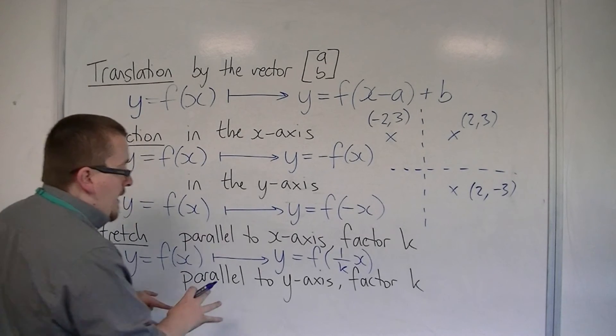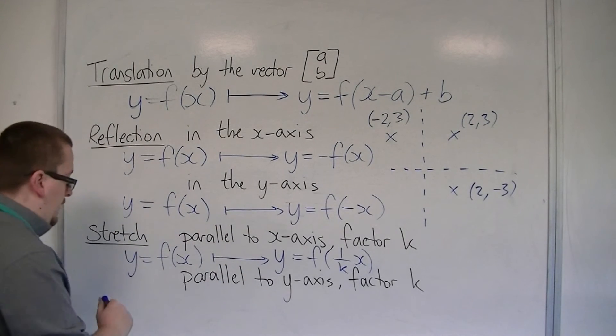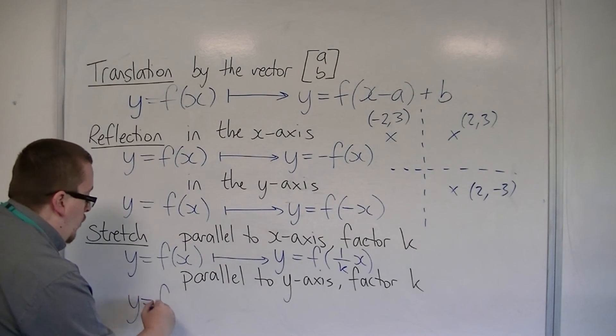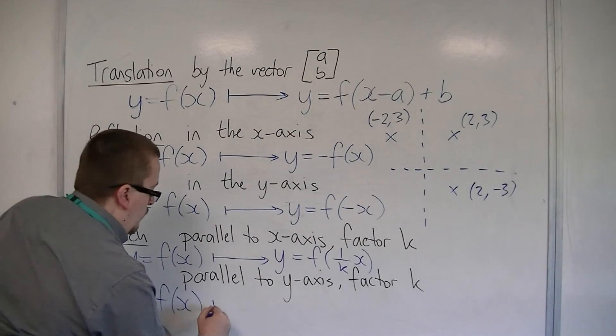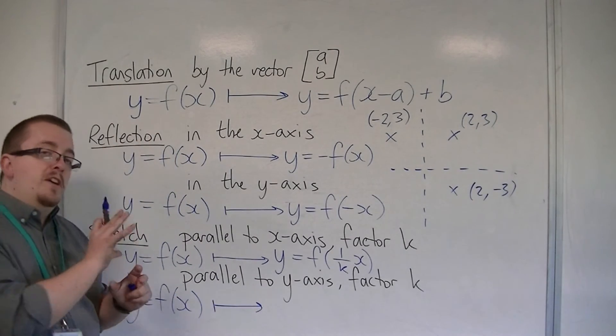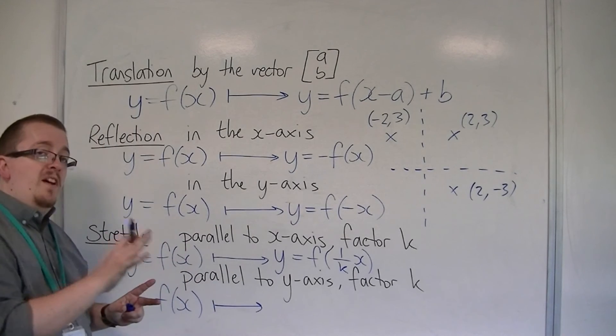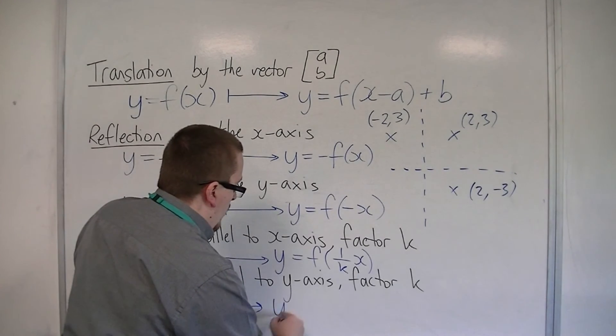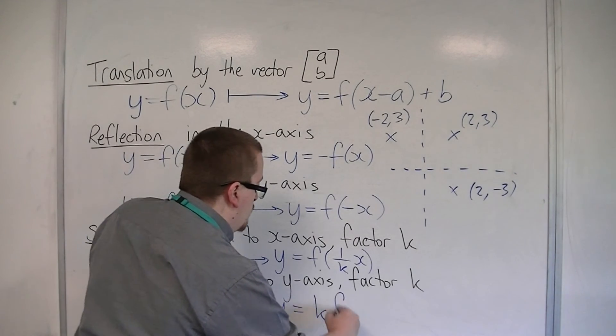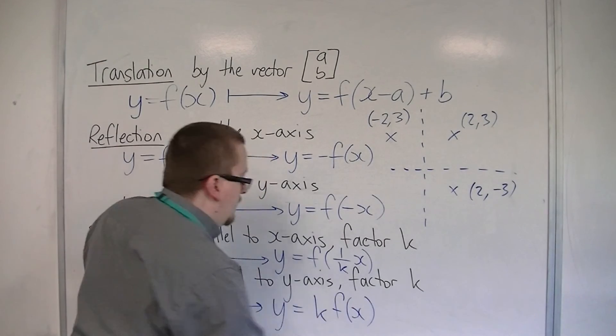In the same way, if you're parallel to the y-axis, then y is replaced with (1 over k)y. But I can then multiply both sides by that k. And so the k will appear in front of the f of x. Okay?